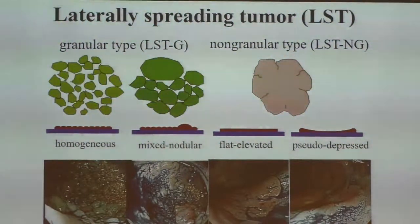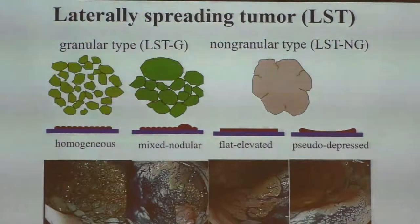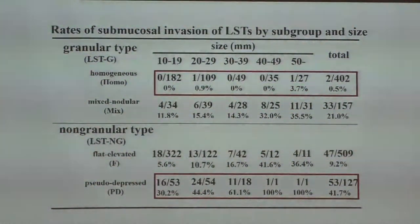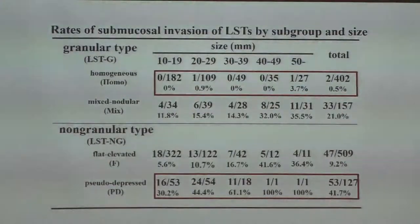LSTs are divided into granular type and non-granular type. Granular type LSTs are further divided into homogeneous type and mixed nodular type. Non-granular type is divided into flat elevated and pseudo-depressed type. This subclassification may look very complicated, but it is important because the rate of submucosal invasion of LSTs is very different among these four subgroups. For example, homogeneous type can be very huge — more than 5, 7, or 10 cm — but in spite of their size, they are very rarely invasive, so they can usually be removed by endoscopy. On the other hand, pseudo-depressed type is usually around 2 to 3 cm, but they are often invasive.